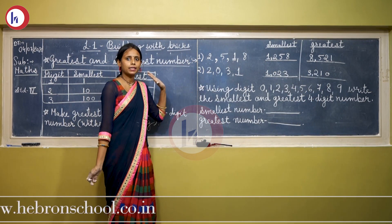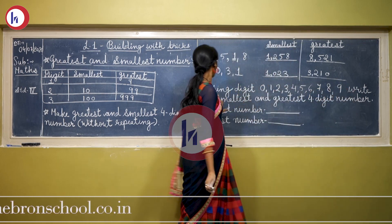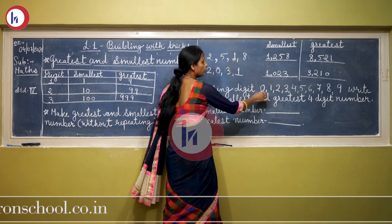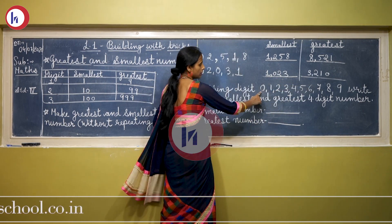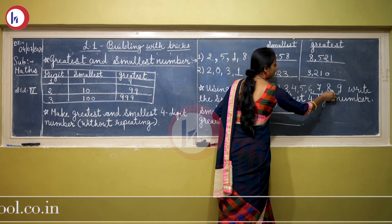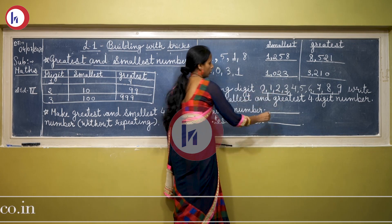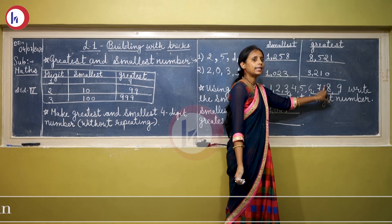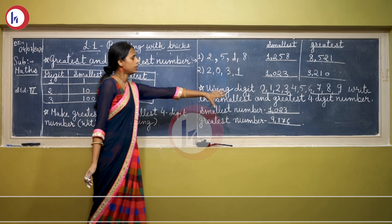Now the last example: using the digits 0, 1, 2, 3, 4, 5, 6, 7, 8, 9, write the smallest and greatest 4-digit number. We have to use only 4 digits. For the smallest number, take the four smallest digits: 0, 1, 2, 3. But we can't start from 0, so we write 1, then 0, then 2, then 3 — giving 1023. For the greatest number, take the last four digits: 9, 8, 7, 6. Write them in descending order: 9, 8, 7, 6 — giving 9876.